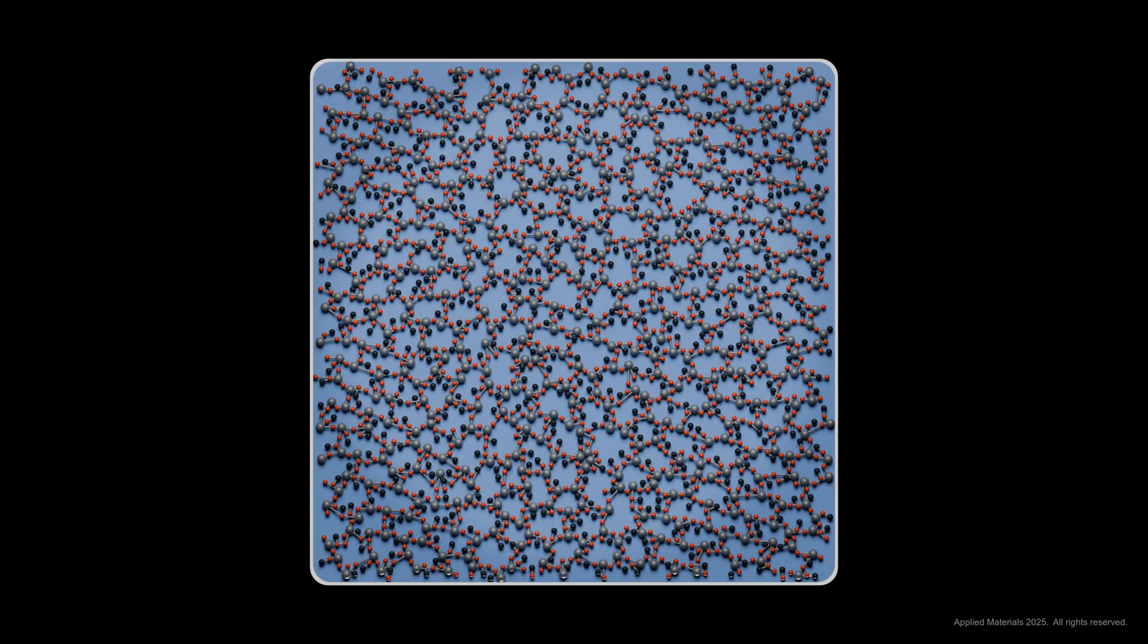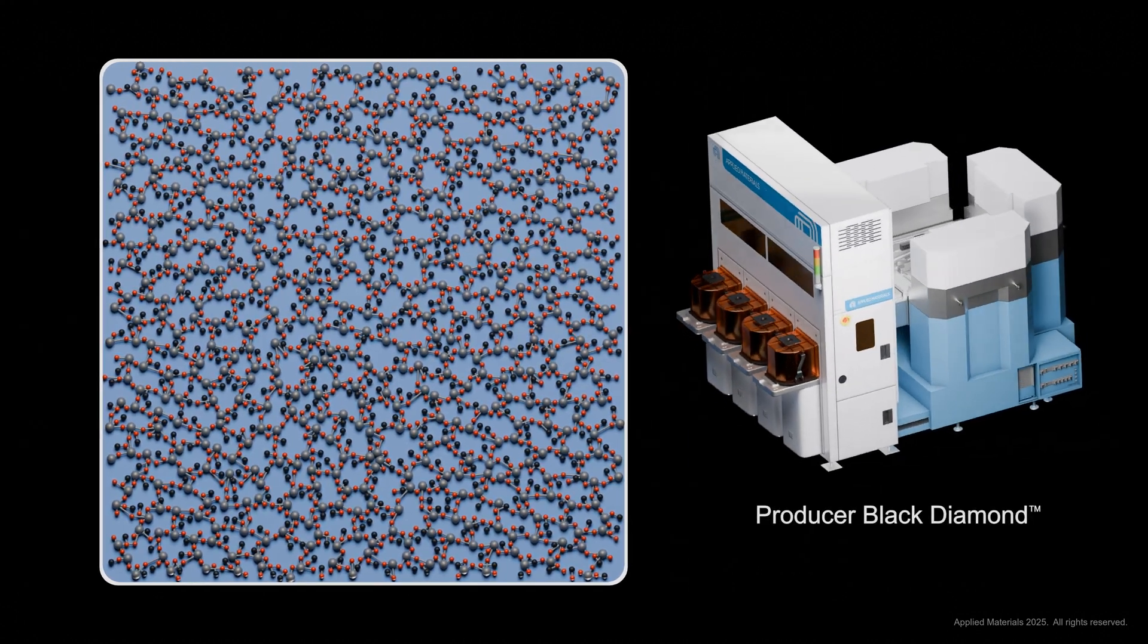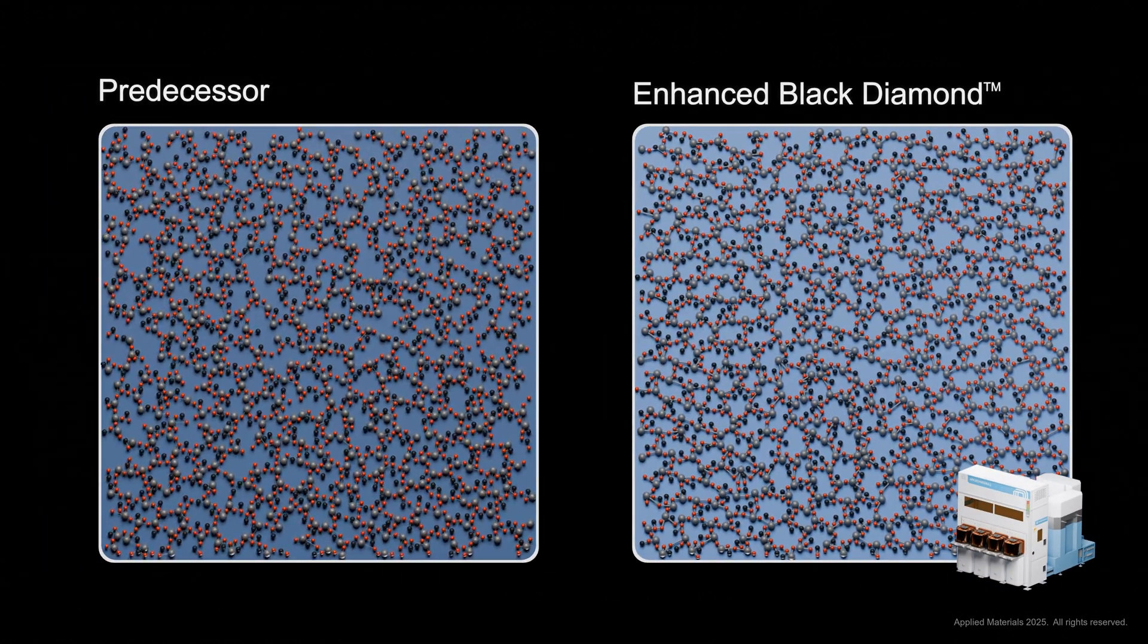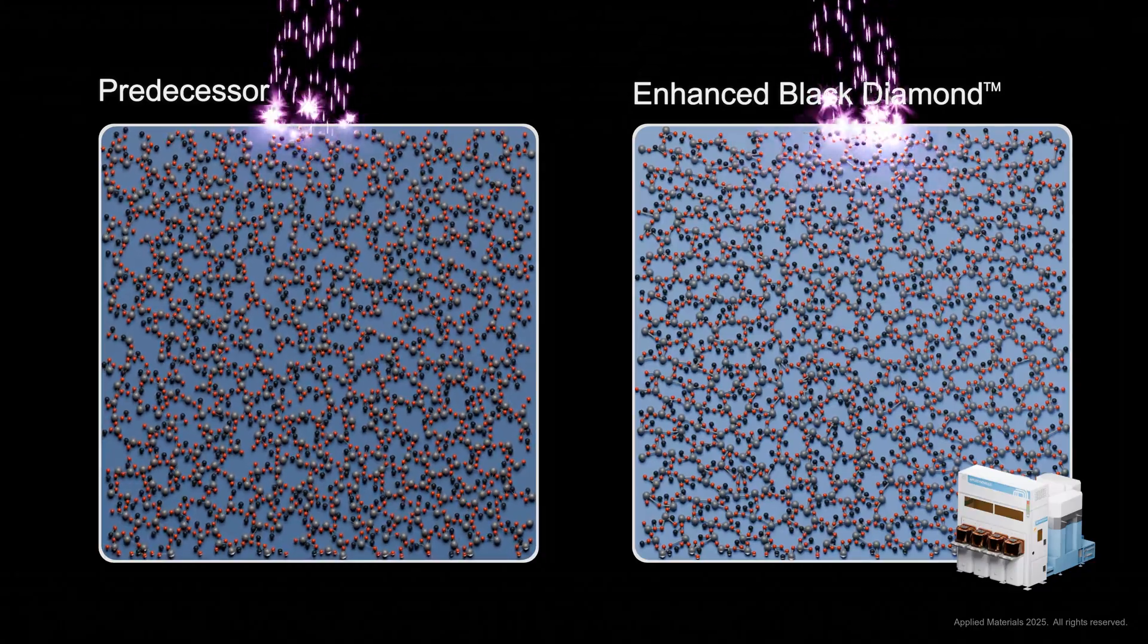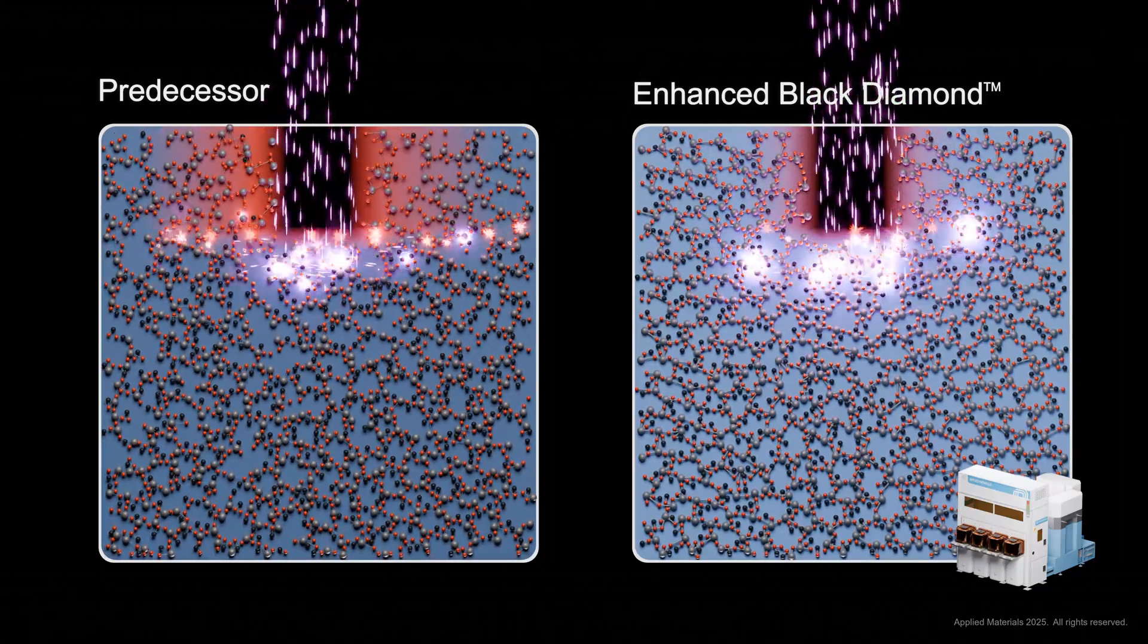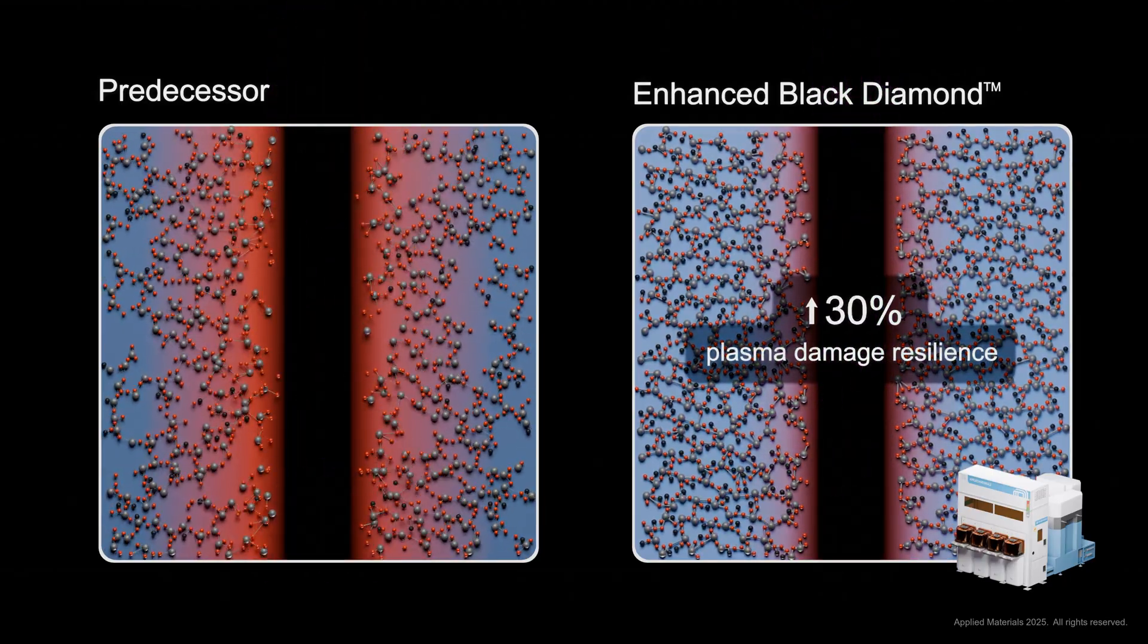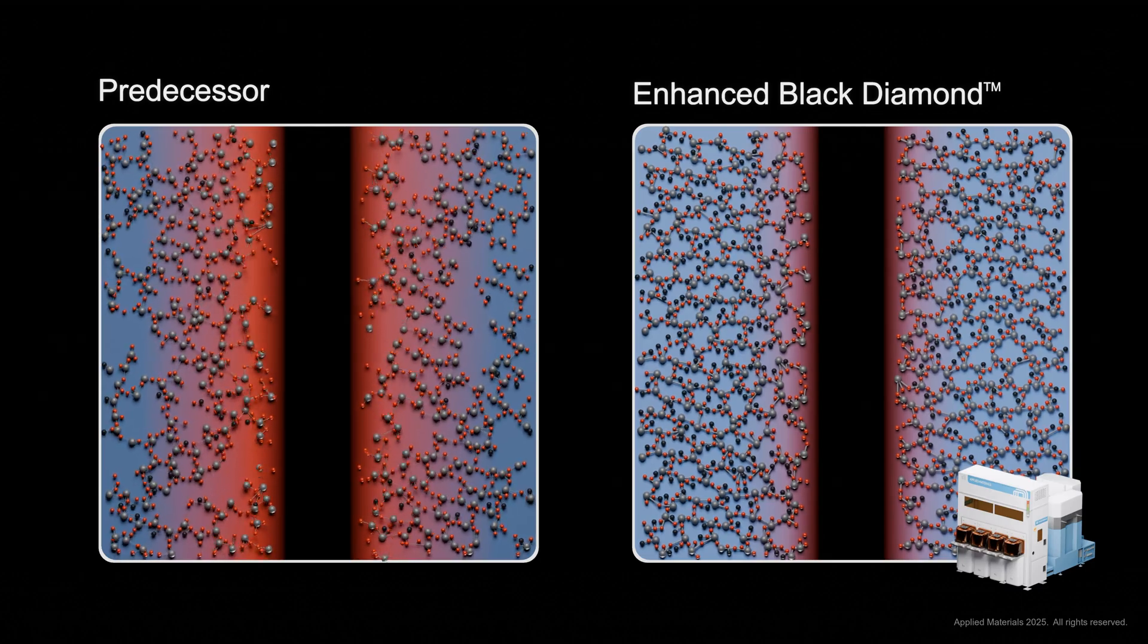The magic now lies within the unique carbon-rich material design of the enhanced black diamond film, which is deposited using our producer platform. Compared to its predecessor, the resulting dielectric has a stronger bonding network that shields more of the carbon from plasma processes after deposition. This improves the dielectric's plasma damage resilience by over 30%, so it has a lower k-value than its predecessor and a 40% increase in strength.